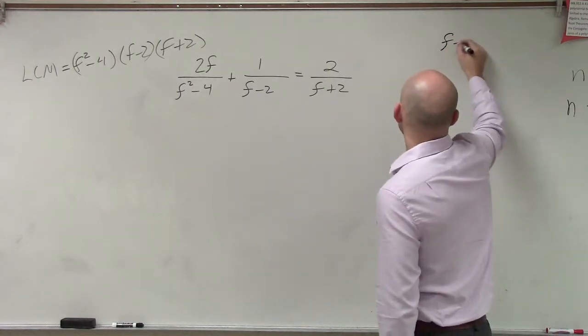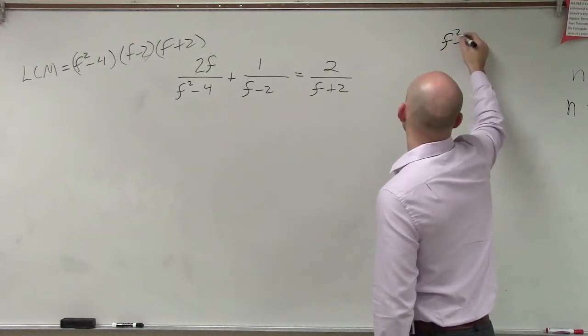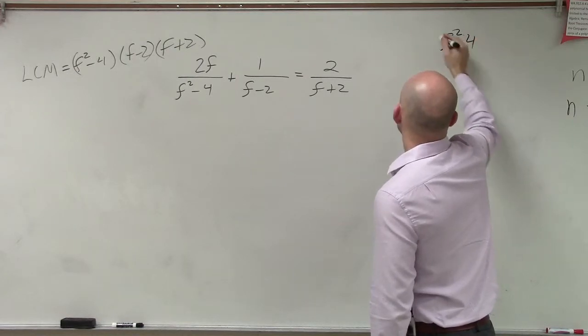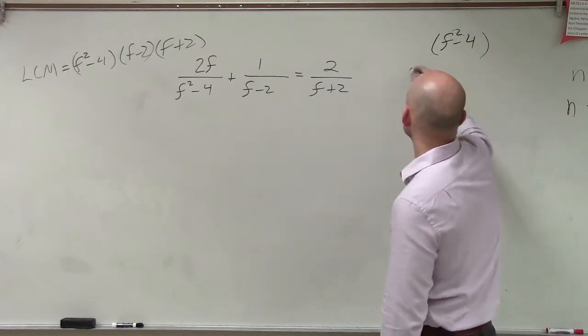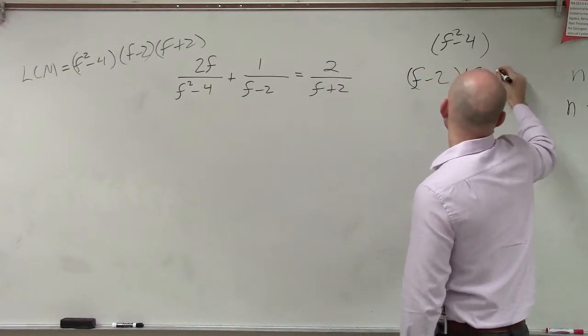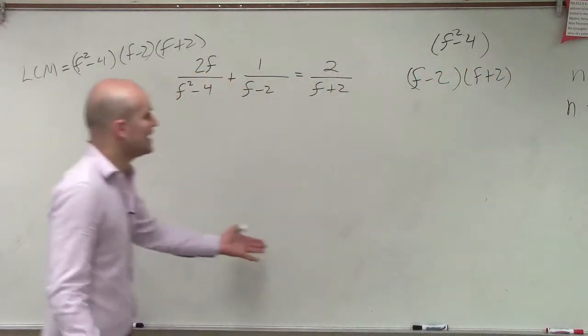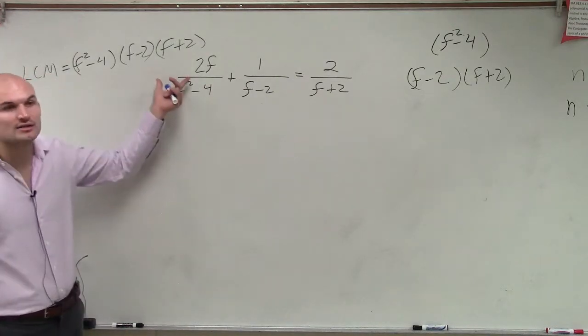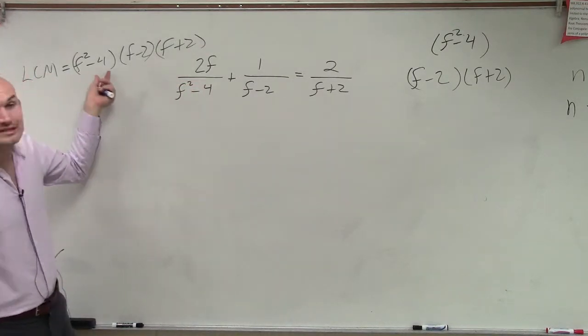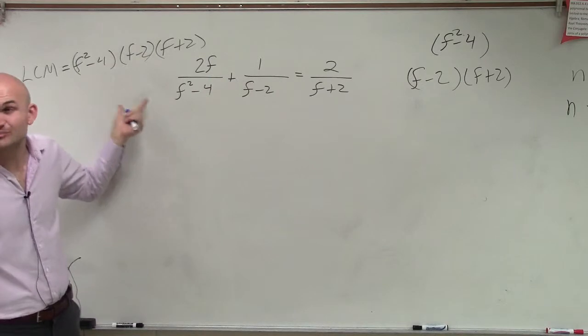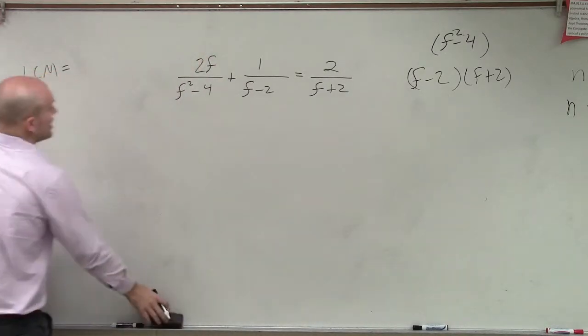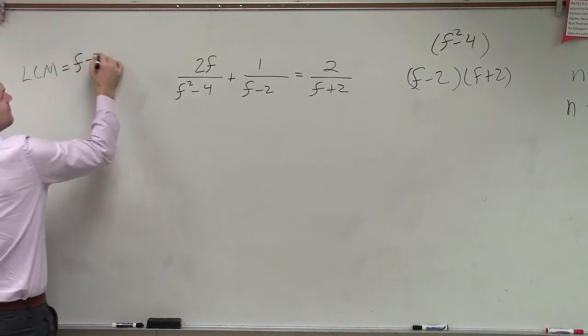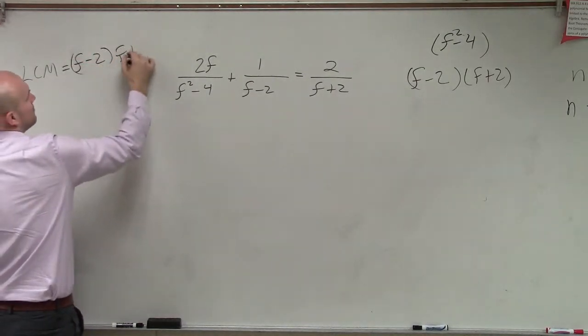So let's factor out f squared minus 4. And when we factor out f squared minus 4, we end up getting f minus 2 times f plus 2. Now notice, do we already have f minus 2 and f plus 2 in our factors? Yes. So I don't need to include this in my least common multiple because it's redundant. Therefore, my LCM is just going to be f minus 2 times f plus 2.